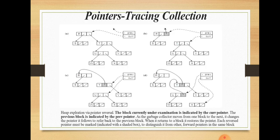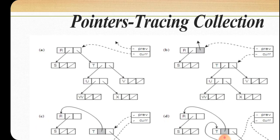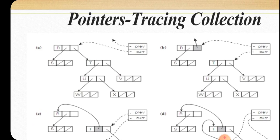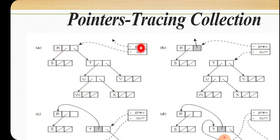Let us check the pointer reversal method with an example. We have a tree where the root node is R, its left child is S, and its right child is T. T has left child U and right child V, and U has left child W and right child X. The pointer reversal method starts at the root node R. The current pointer points to R, and the previous pointer comes from some external reference.